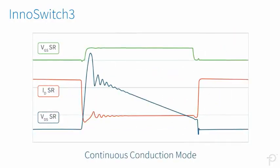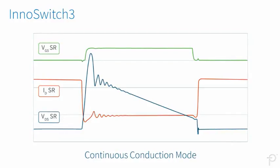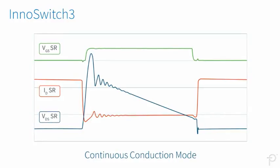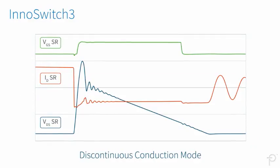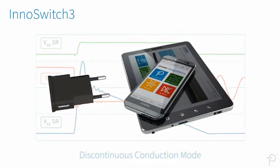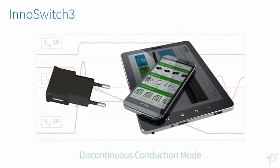Unlike typical synchronous rectification circuits, designs using the InnoSwitch 3 family can operate in both continuous and discontinuous conduction modes. This allows flexibility in designing adaptive voltage chargers.